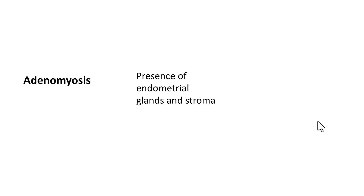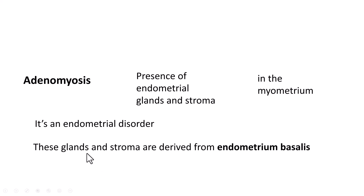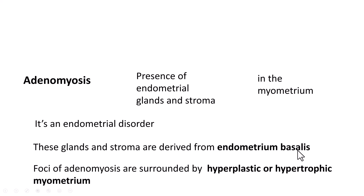Adenomyosis is the presence of endometrial glands and stroma — basically, it is the presence of endometrium in the myometrium. Endometrium incorporates both glands and stroma. This is an endometrial disorder, and these glands and stroma are derived from endometrium basalis. This focus of adenomyosis is often surrounded by hyperplastic or hypertrophic myometrium.